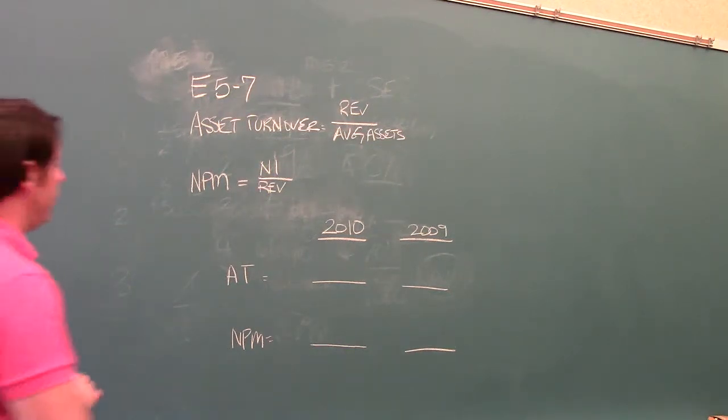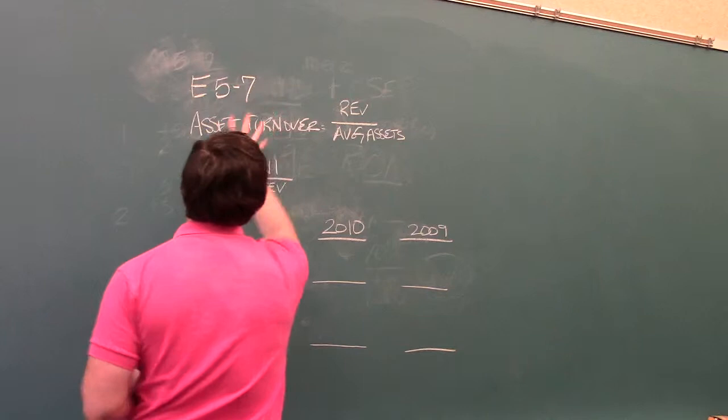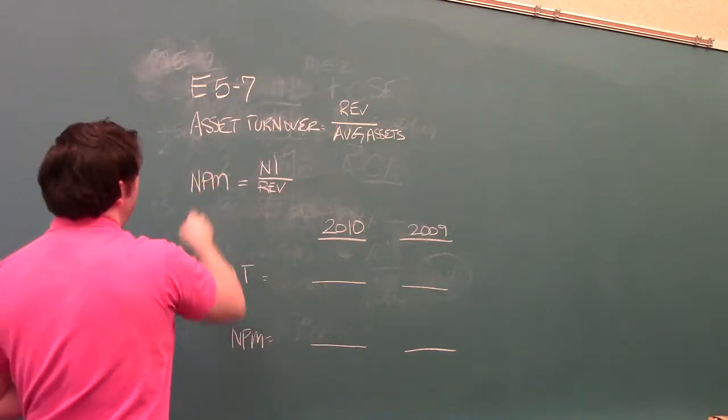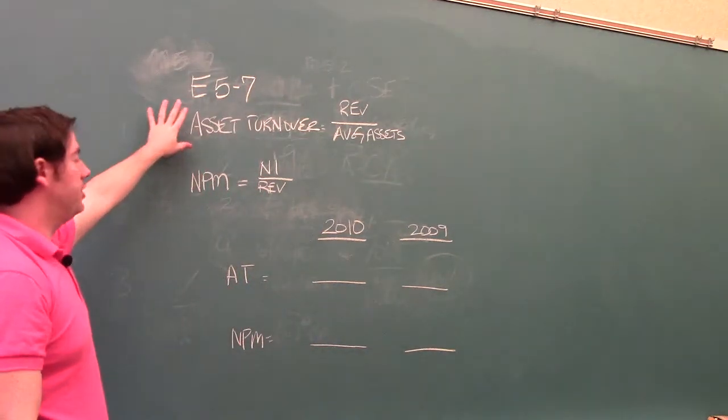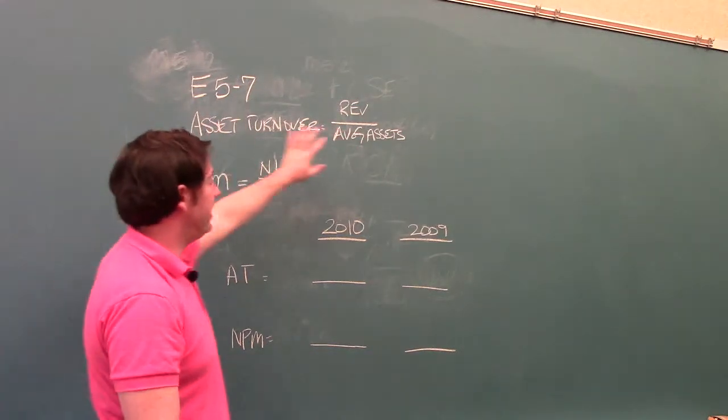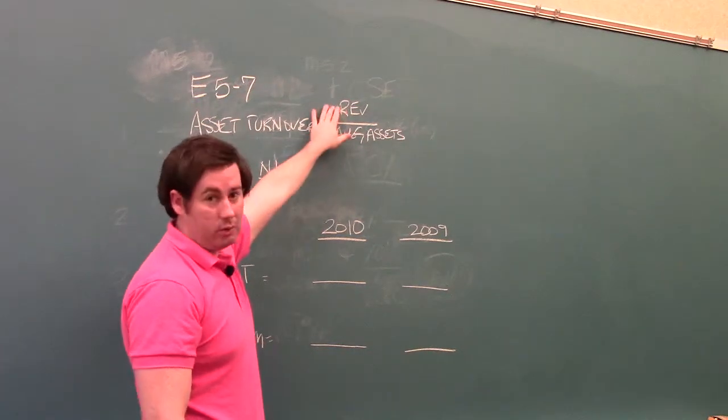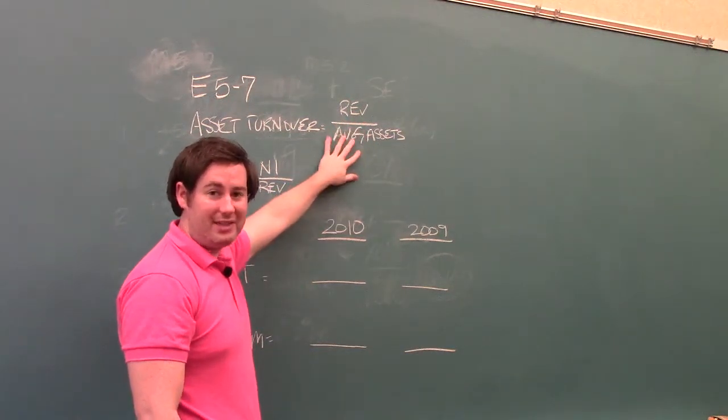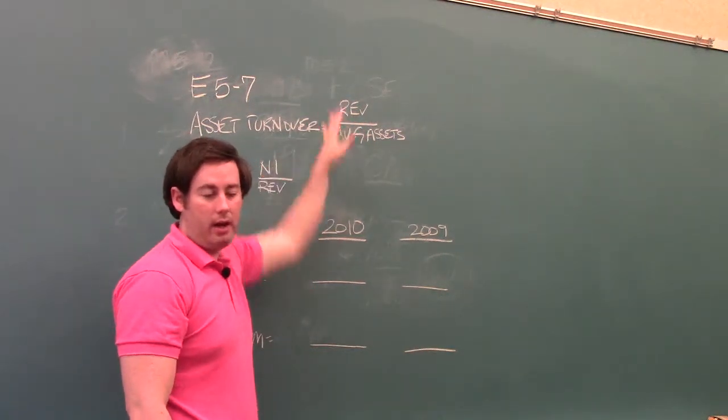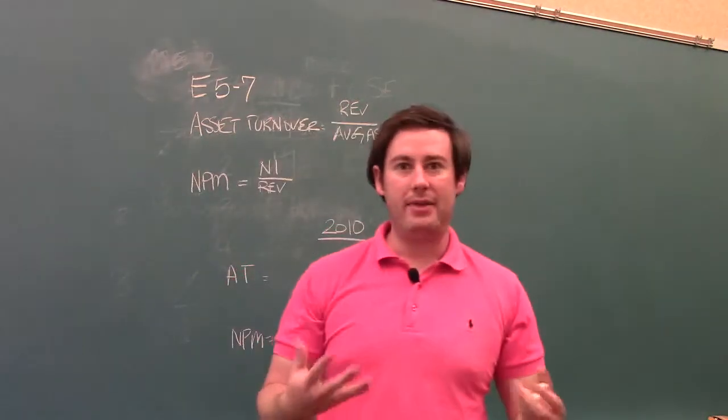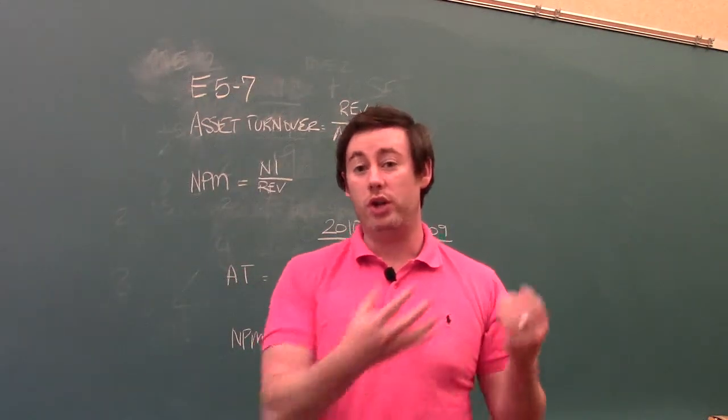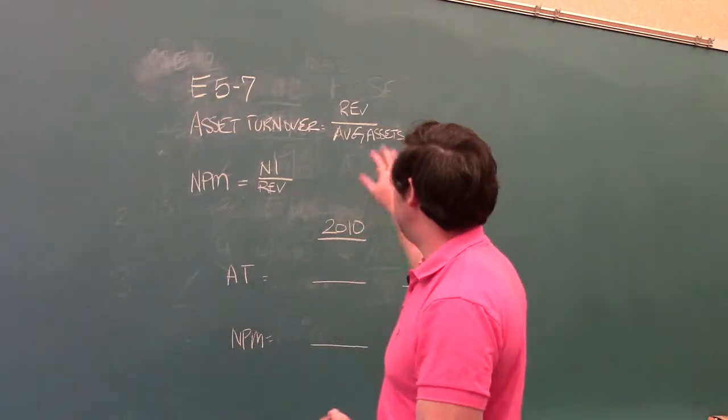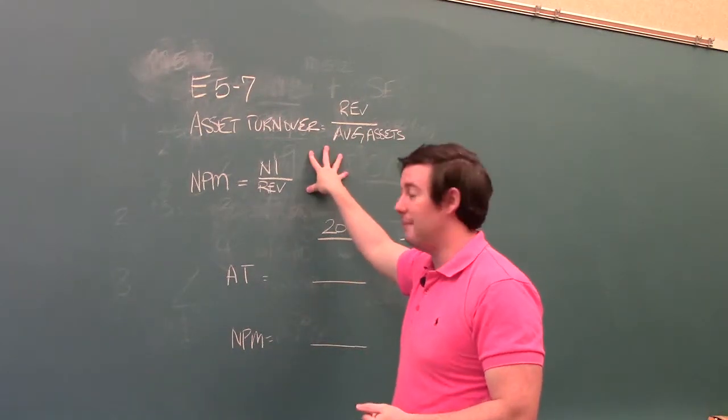I've written for you the equations here for the asset turnover and the net profit margin ratio. The asset turnover ratio takes the average assets, divides them into revenue. Don't forget that this represents how well a company is using its assets to generate revenue. We buy things in a company in order to use them to generate revenue, and that's what the asset turnover ratio is trying to measure.